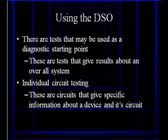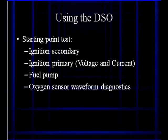There are some tests that may be used as diagnostic starting points. These tests give results about an overall system. Those are the most efficient for trying to find a problem when you don't know the source. We call these area tests. Can we test a big area? Can we throw a big net and see what's in there? Then, if we can find something wrong, we narrow that down to individual circuit tests. These are circuits that give specific information about a circuit.